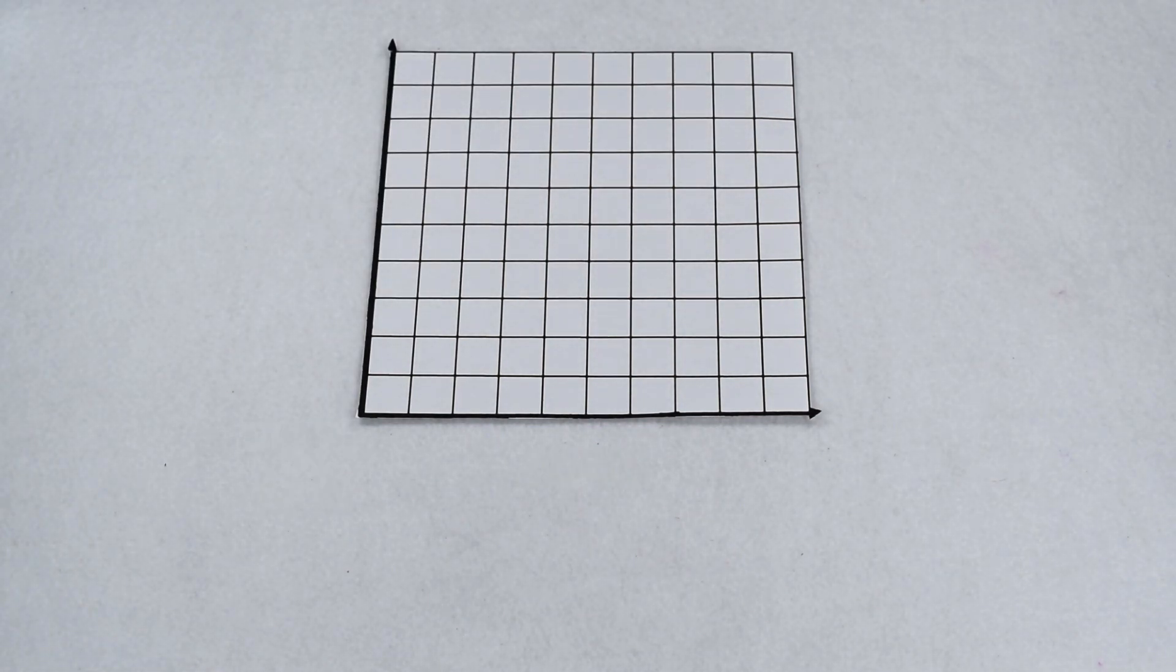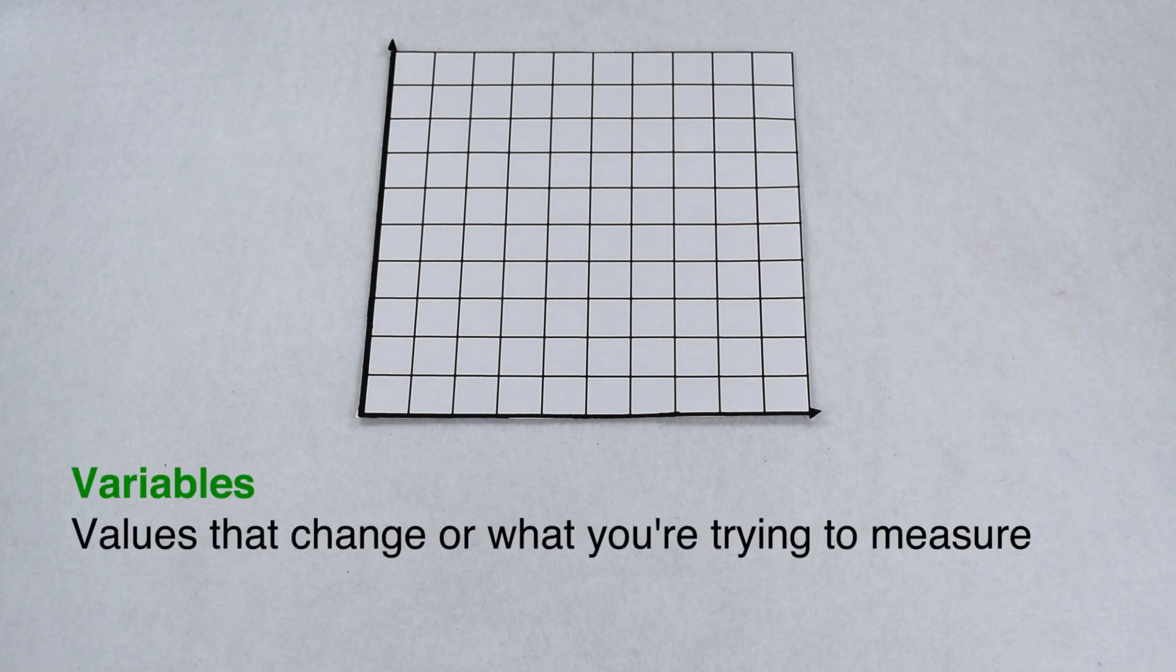When we put data on our graph, we usually have two variables. Variables are a change we are trying to measure. On our graph, we have an independent and a dependent variable.